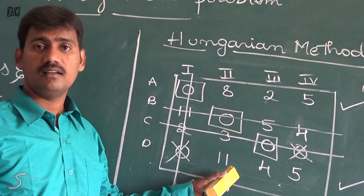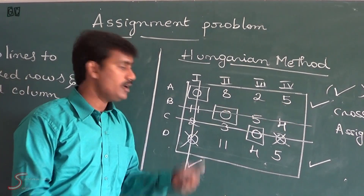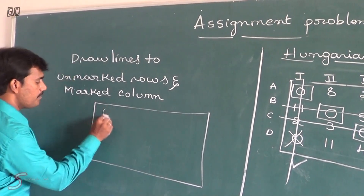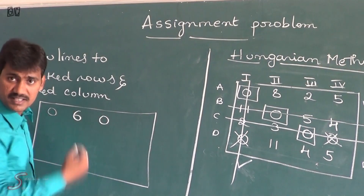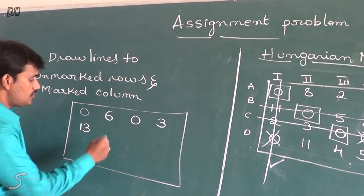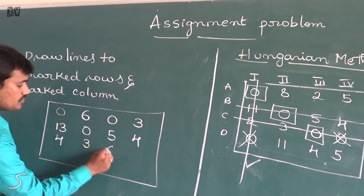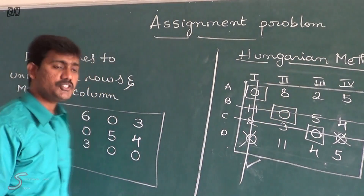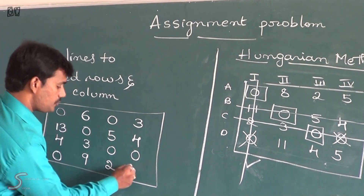Take the minimum element from the uncovered cells; that minimum is 2. Subtract it from the remaining uncovered elements and add it to the junction elements. The updated matrix becomes: Row A: 0, 6, 0, 3. Row B: 13, 0, 5, 4. Row C: 4, 3, 0, 0. Row D: 0, 9, 2, 3. That is the updated matrix after applying the Hungarian method adjustment.